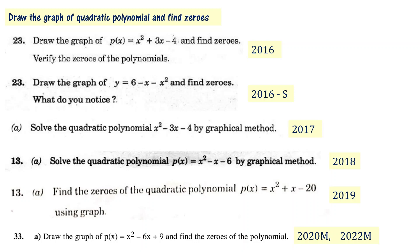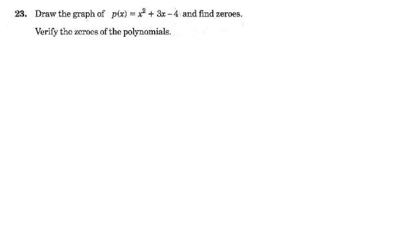In this particular video, we will solve the problem: Draw the graph of p(x) = x² + 3x − 4 and find zeros. Verify the zeros of the polynomial. So p(x) = x² + 3x − 4.